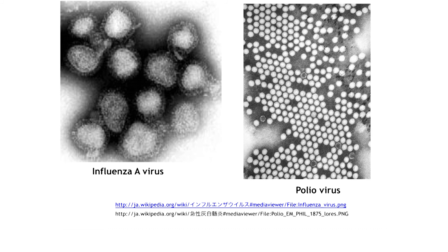On the other hand, poliovirus appears to be a regular icosahedron. However, these particles do not replicate by themselves.